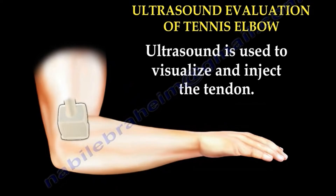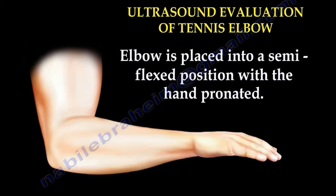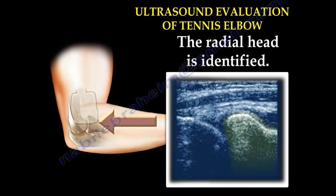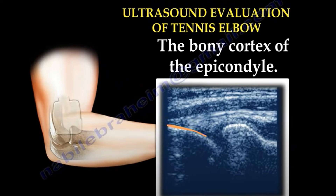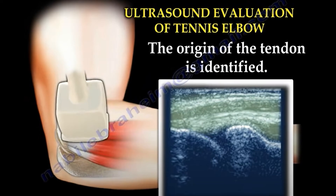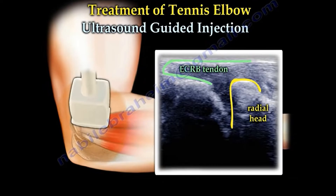Ultrasound can be used to visualize and inject the tendon. The elbow is placed in a semi-flexed position with the hand pronated. The transducer is positioned parallel to the lateral epicondyle and the radial head. The radial head is identified — you can see it here in green — and the bony cortex of the epicondyle is identified. When the tendon is normal, it is smooth and homogeneous with no Doppler flow. The origin of the tendon and the radial head are identified; it is actually a small tendon.